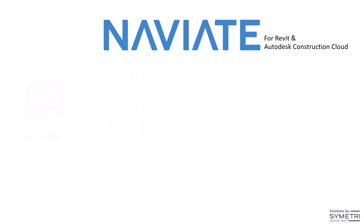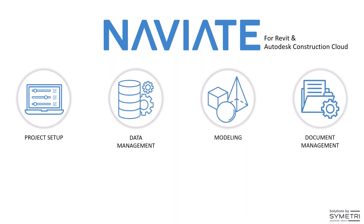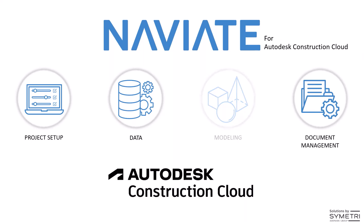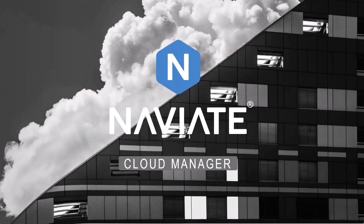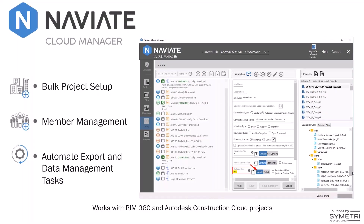Naviate is built to help Revit and Autodesk Construction Cloud users work smarter, and is targeted to streamline project setup, data management, modeling, and document management. Today's webinar focuses on how Naviate Cloud Manager can be used to create ACC projects in bulk and manage users on ACC projects in bulk. Naviate Cloud Manager was purpose-built and designed to accelerate project setup, member management, as well as automate export and data management tasks for both BIM 360 and Autodesk Construction Cloud projects.